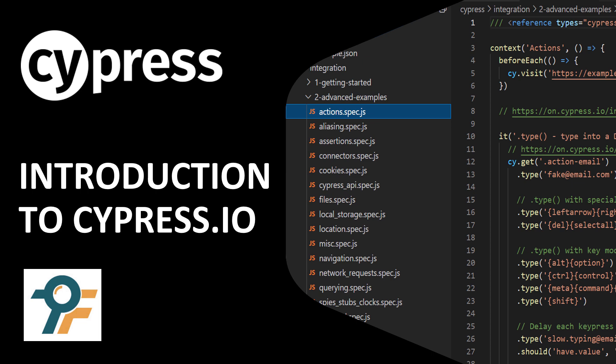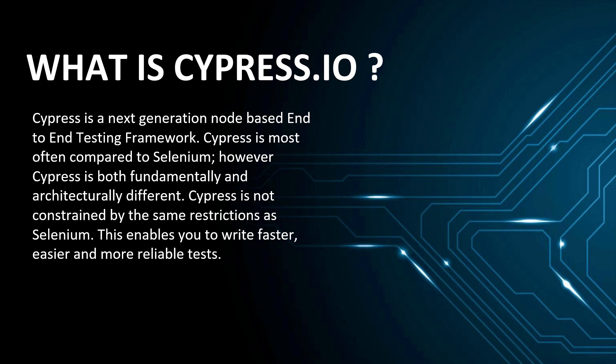Our first session is an introduction to Cypress. Cypress is a next-generation Node-based end-to-end testing framework. It is usually compared with Selenium, however their architectures are completely different. Selenium uses APIs to interact with the browser, whereas Cypress sits inside your browser and executes tests there. That's the reason Cypress is faster and easier to work with.